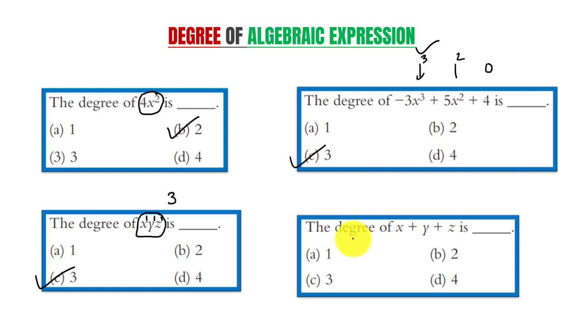Last question is the degree of x + y + z is. Here there are three terms. Exponent of first term is equal to 1, second term 1, and exponent of third term that is z is equal to 1. So the highest is 1 only. Hence the degree of sum of x, y and z is 1.